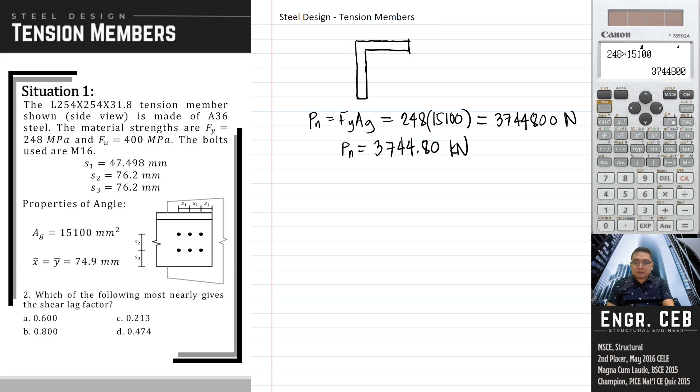Shear lag factor is used in determining the nominal strength for tensile fracture. For tensile fracture, the formula of the nominal strength is Pn equals Fu times Ae. Ae, that is the effective net area, is determined by the product of the shear lag factor U and the net area An.